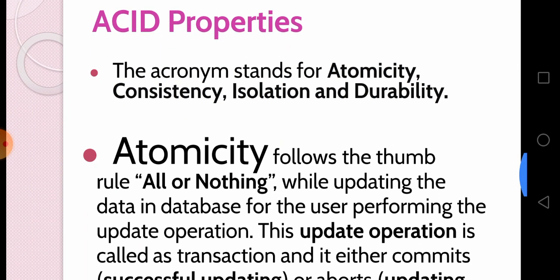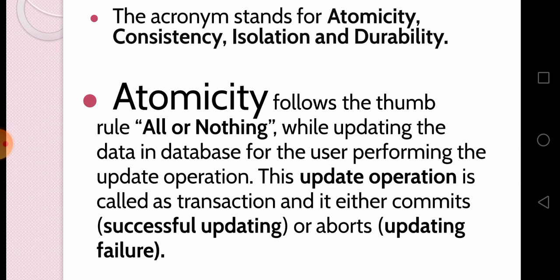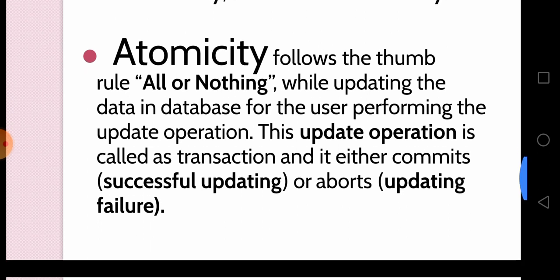Next, we move to ACID properties — it is an important topic. ACID stands for Atomicity, Consistency, Isolation, and Durability. Atomicity follows the thumb rule: all or nothing. While updating data in a database using an update operation — which is called a transaction — there are two conditions: update successfully or update failure. After the update operation, it is either updation success or updation failure.